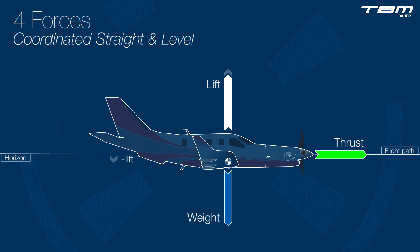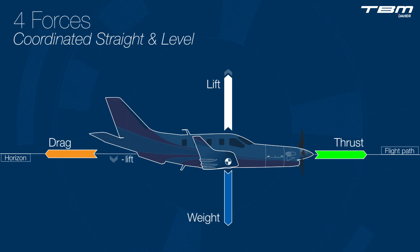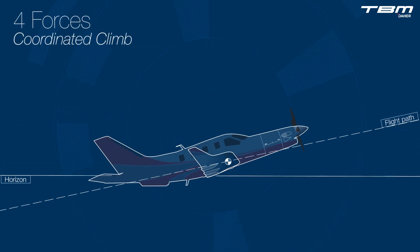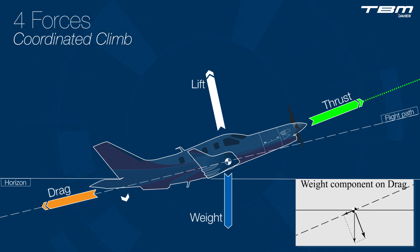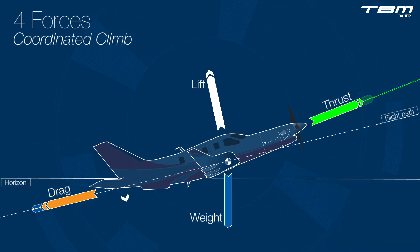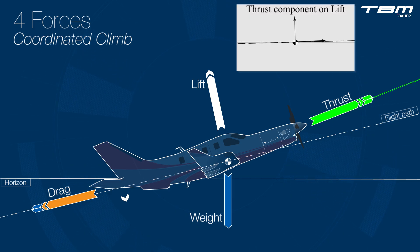Therefore, for simplicity, thrust pulls the aircraft forward inline and parallel to the longitudinal axis of the aircraft. Drag also acts parallel to the flight path or relative wind, but in the reverse direction. Weight acts towards the center of the earth, but during climb a percentage of the weight has an aft component which opposes thrust.